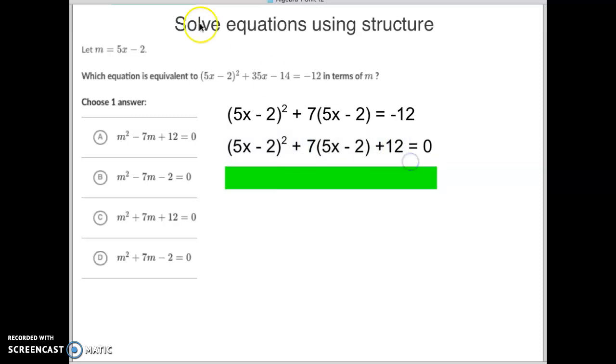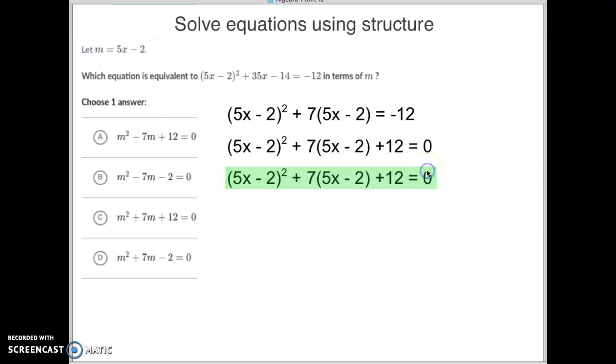So I've got (5x - 2) squared plus 7 times (5x - 2) plus 12. Now we're going to do a little substitution. Anywhere we see the term 5x minus 2, we're going to replace it with the term m. So you're going to see I'm going to rewrite that sentence right here, but anywhere I see a 5x minus 2, I'm going to replace it with an m term. So instead of it being (5x - 2) squared, it's now just m squared.